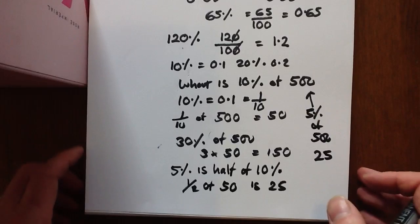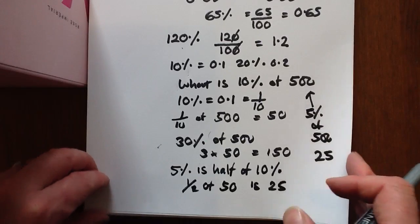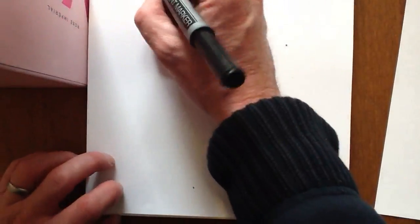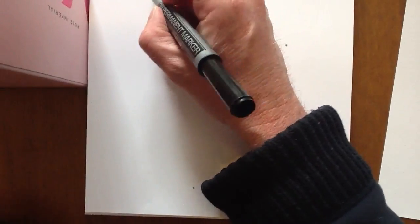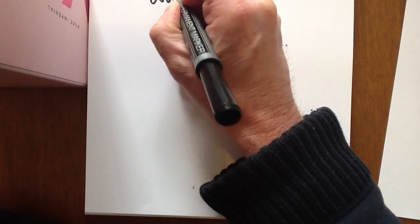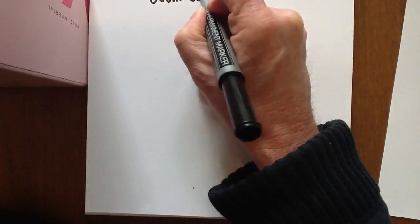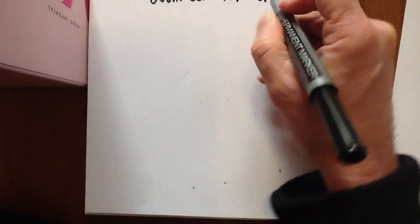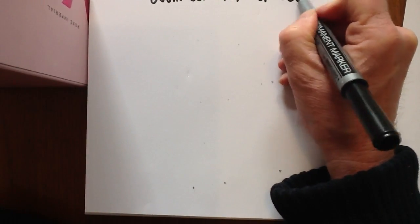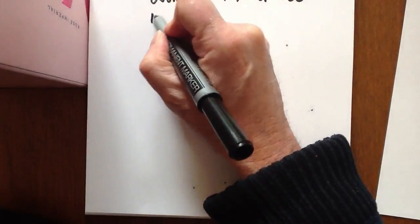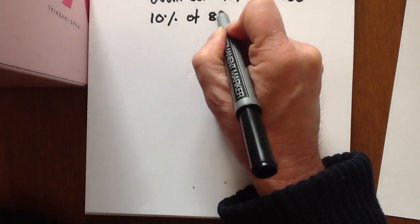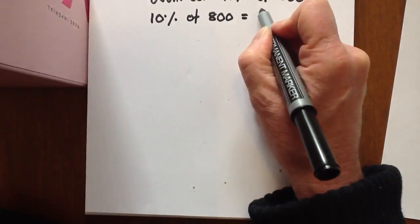That's a run-through on some fractions, decimals, and percentages. Let's do a few more. Work out 45% of 800. We'll start with 10%: 10% of 800 equals 80.